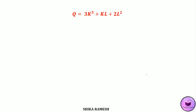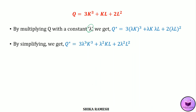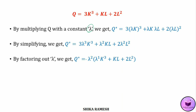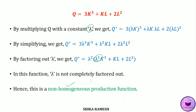Let's take another example: Q = 3K³ + KL + 2L². Multiplying this production function with a constant lambda, we get Q* = 3(λK)³ + (λK)(λL) + 2(λL)². Simplifying by opening the brackets, Q* = 3λ³K³ + λ²KL + 2λ²L². Factoring out lambda squared, we get Q* = λ² × (λK³ + KL + 2L²). Since lambda could not be factored out completely, this production function is also a non-homogeneous production function.